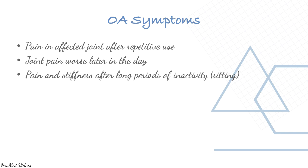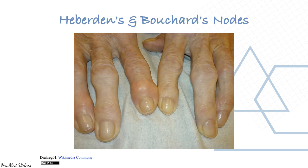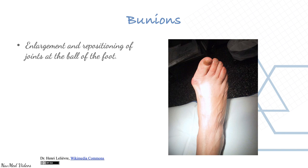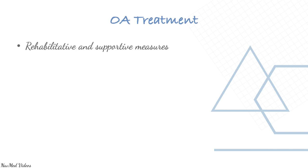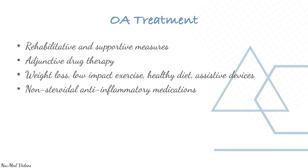Symptoms of osteoarthritis include pain worse later in the day, pain and stiffness after long periods of inactivity, swelling, crepitus, and warmth. The patient may walk with a limp; bony enlargement from spur formation is characteristic — for example, Heberden's and Bouchard's nodes in the hand. A bunion is an enlargement and repositioning of the joint at the ball of the foot, mostly in women, treated with footwear alteration, foot supports, medications, and surgery. Treatment overall is rehabilitative and supportive, including weight loss, low-impact exercise, healthy diet, assistive devices, and non-steroidal anti-inflammatory medications.